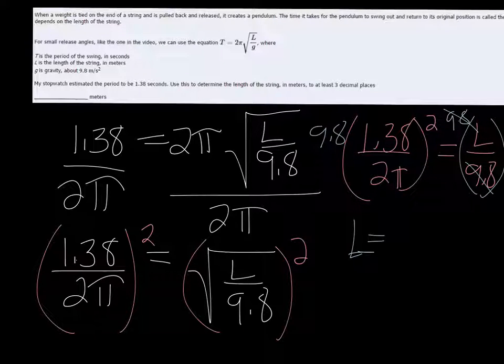So I'm going to start off by putting 1.38 divided by parenthesis 2π, end parenthesis. You have to have the parentheses, otherwise it's going to divide by 2 and multiply by π. We're going to square that, and then multiply by 9.8.